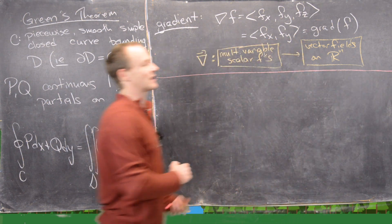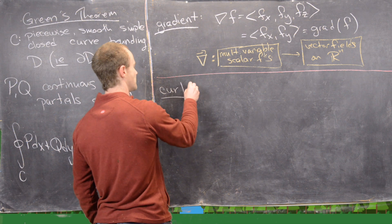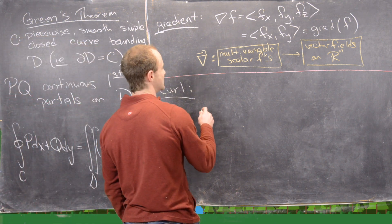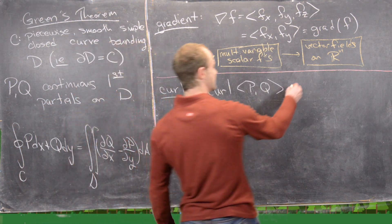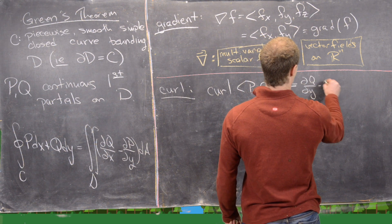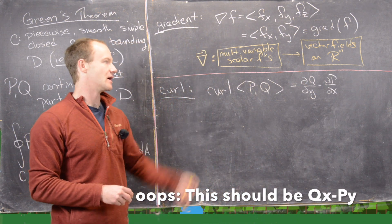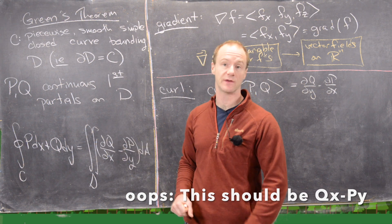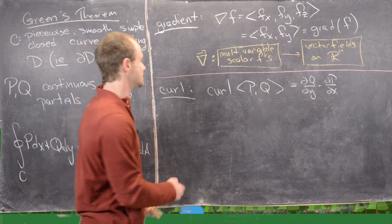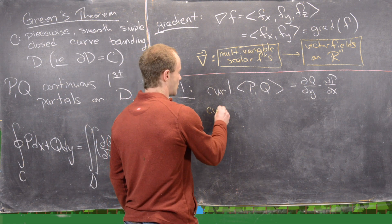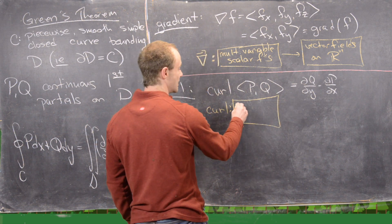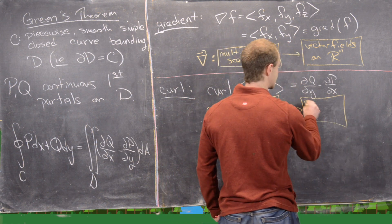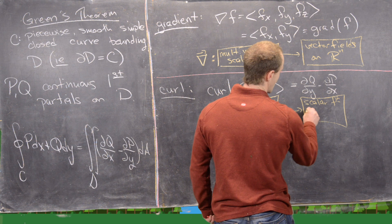The next operation is the curl. In two dimensions, the curl of the vector field (P, Q) is given by dQ/dx minus dP/dy — a scalar function given by that combination of partials. Notice that's exactly what appears in Green's Theorem. The curl in 2D takes a vector field in R2 as input and gives a scalar function of two variables as output.